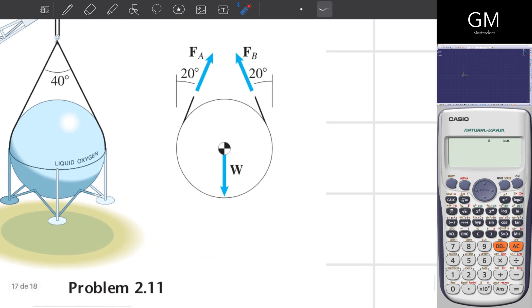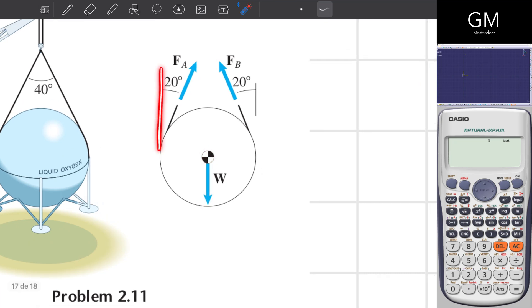As you can see right here, I have a spherical tank and there are three forces applied to it. These ones that come from two cables and the weight. With respect to the vertical line, you can see right here that I have 20 degrees and 20 degrees.